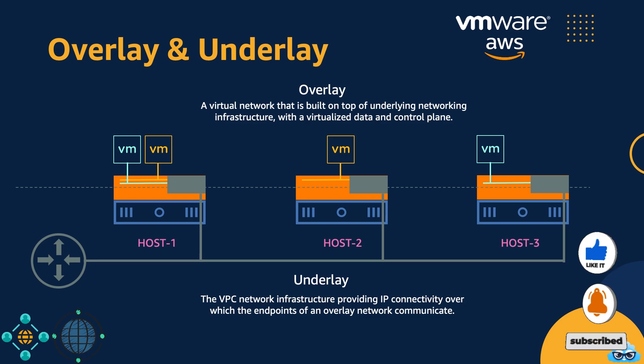Before we delve into networking details, it's crucial to grasp the distinction between overlay and underlay networking. The underlay network is built upon AWS VPC infrastructure, forming the physical backbone that supports your VMware Cloud on AWS environment. NSX virtual networks are constructed atop this foundation, providing the virtualized, software-defined networking layer that facilitates communication between your virtual machines and services. Understanding this separation helps us optimize both the physical underlay and the virtual overlay for a robust and high-performing network environment.